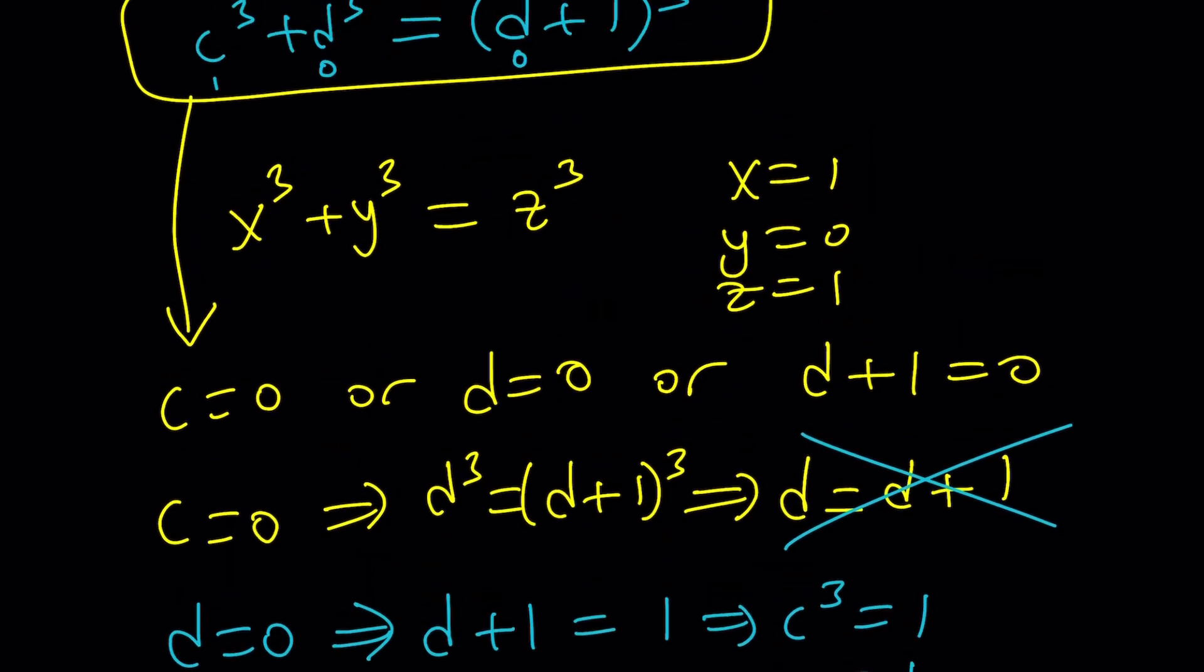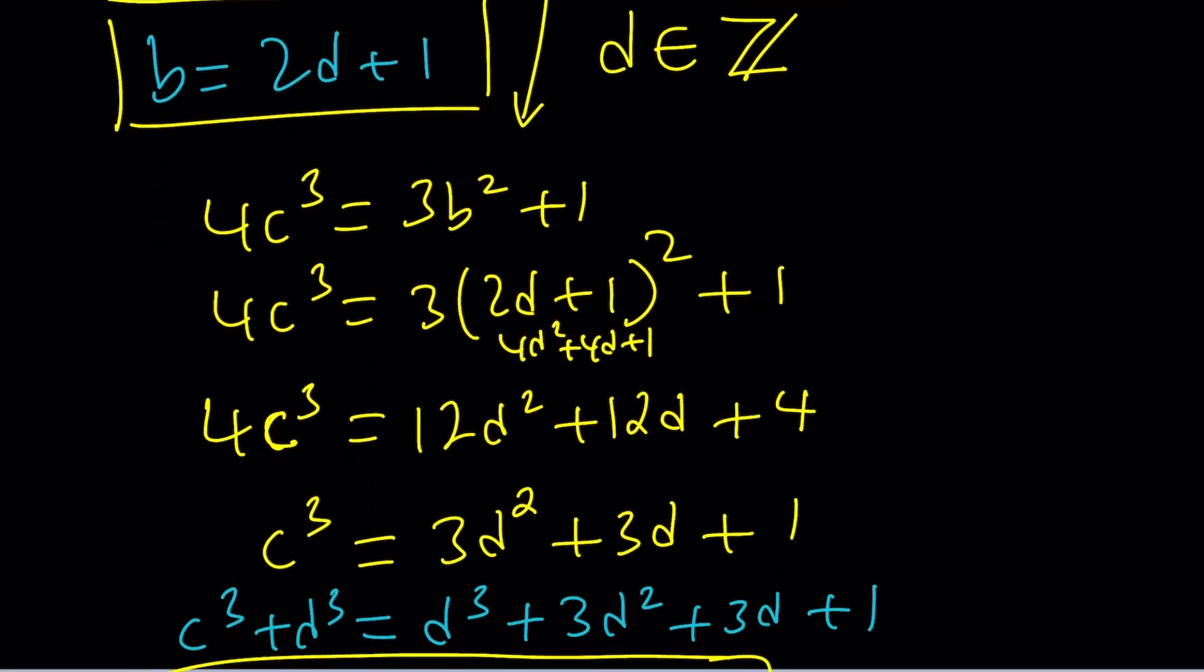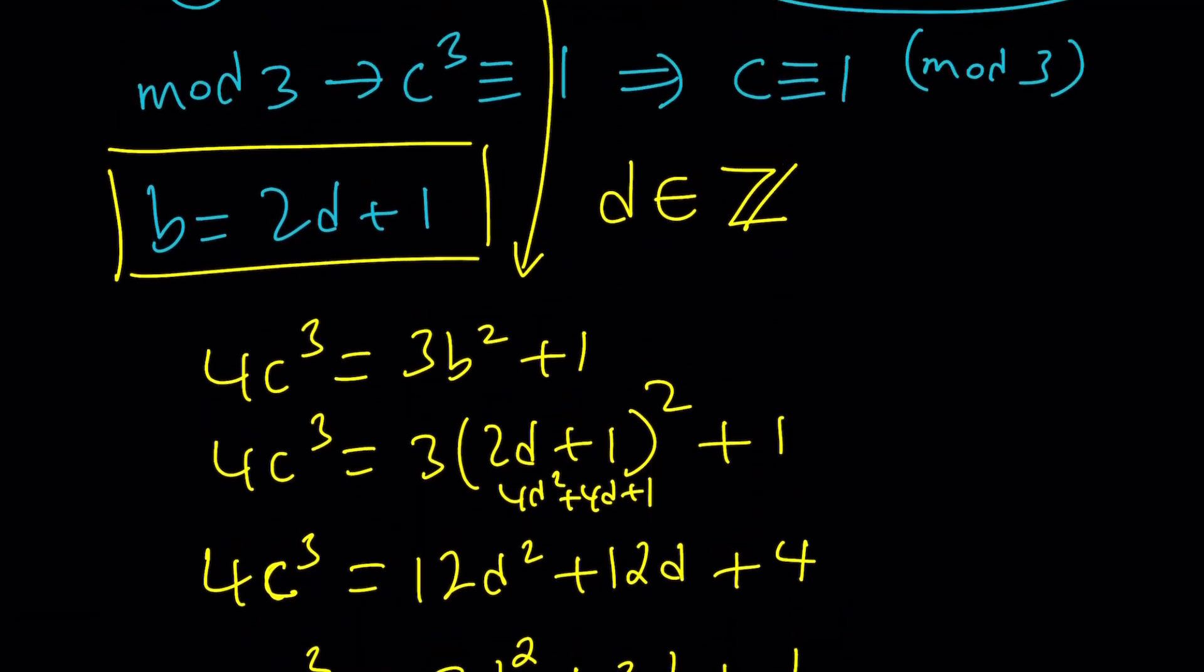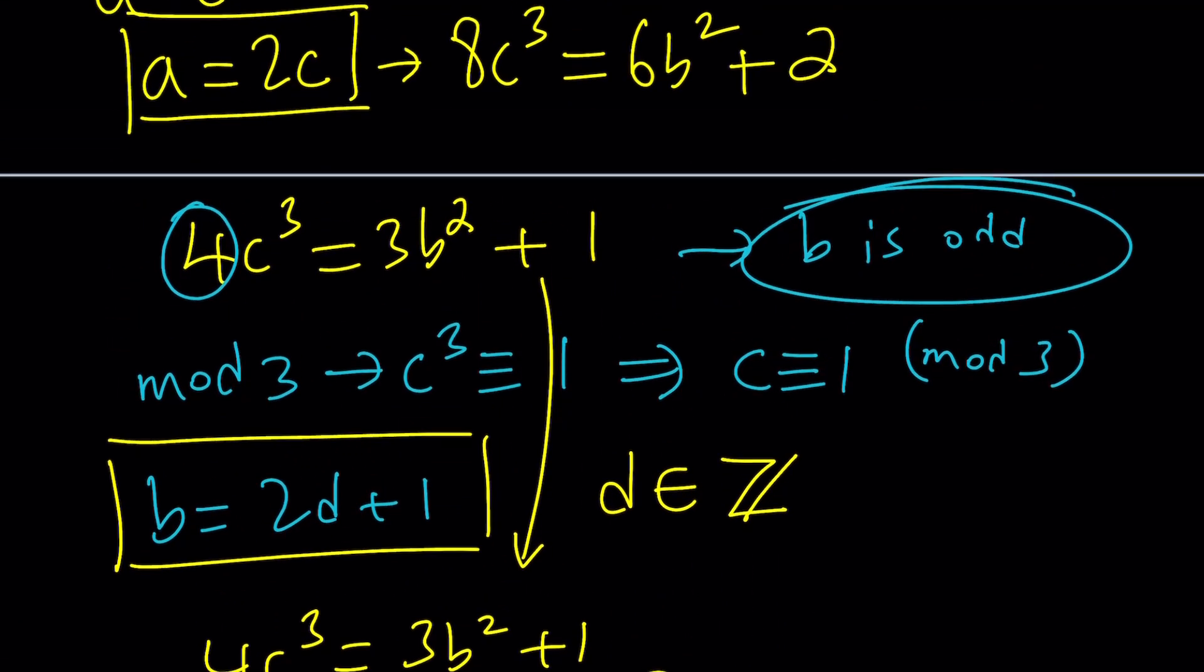But C = 1 means what? Let's go back to where C was and find out what that means in terms of A and B. Well, if C is equal to 1, let's go ahead and find out. From here, D is going to be 0. If D is 0, B is 1. And if B is 1, A is going to be 2. Because if C is 1, then A is 2. Does that make sense?